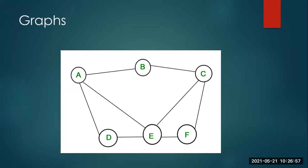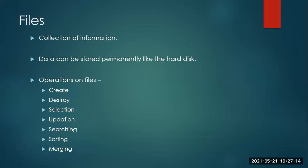We are done with trees and graphs — you do not have any units on them, no implementation, just a one-line definition that could be asked for two marks. Now let us proceed to the last part: files. In general terms, a file is something which stores information. When you say 'get me a file,' you imagine a rectangular object in which you place documents or marks cards — you are trying to store those documents permanently.